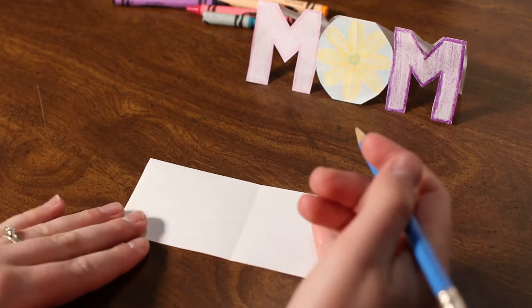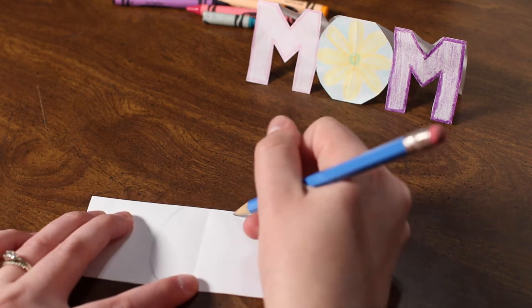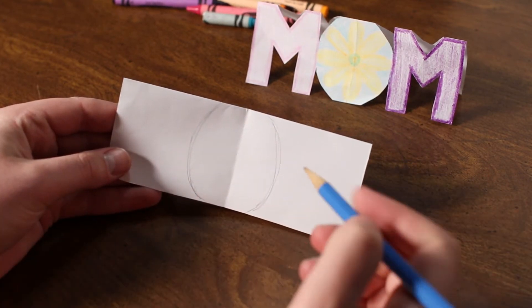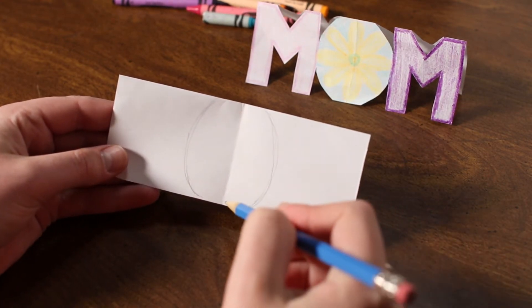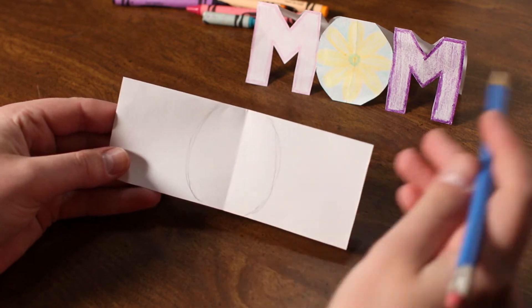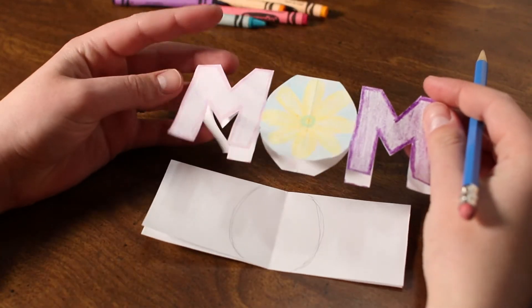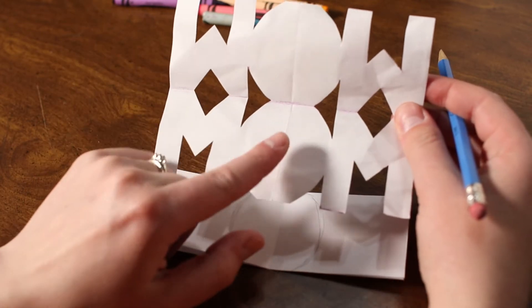So now, we take our pencil and we just sketch it. As you draw your O, make sure that the top and bottom kind of go off the paper. When we cut it out, we want to make sure that everything stays connected.